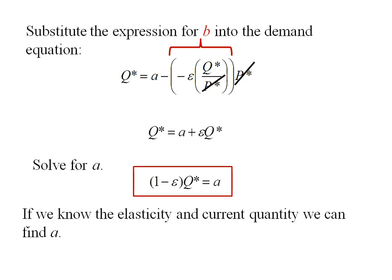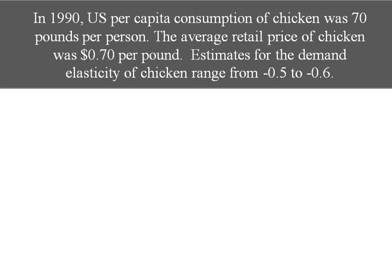Here's an example. In 1990, U.S. per capita consumption of chicken was 70 pounds per person. The average retail price of chicken was 70 cents a pound. Estimates for the demand elasticity of chicken range from negative 0.5 to negative 0.6.